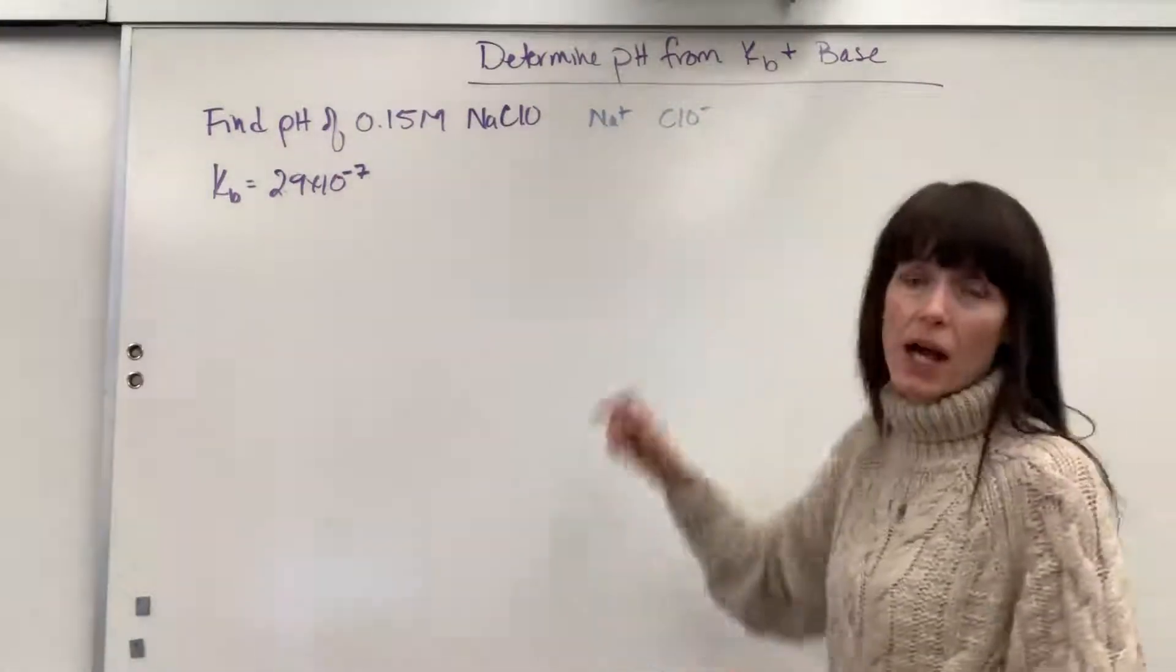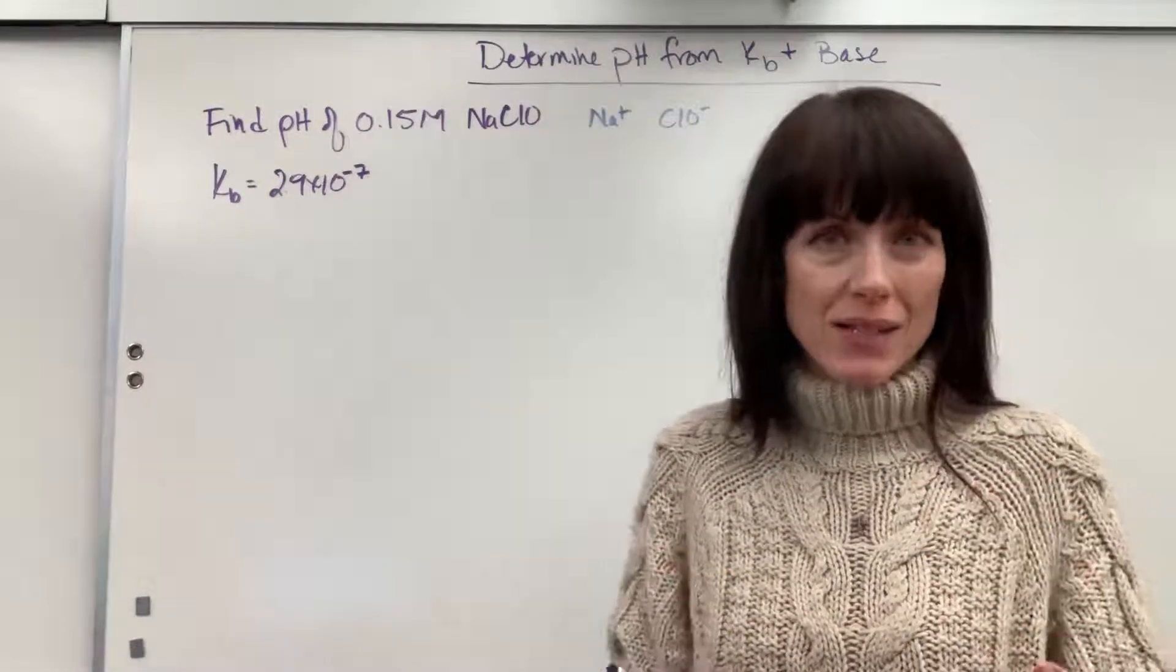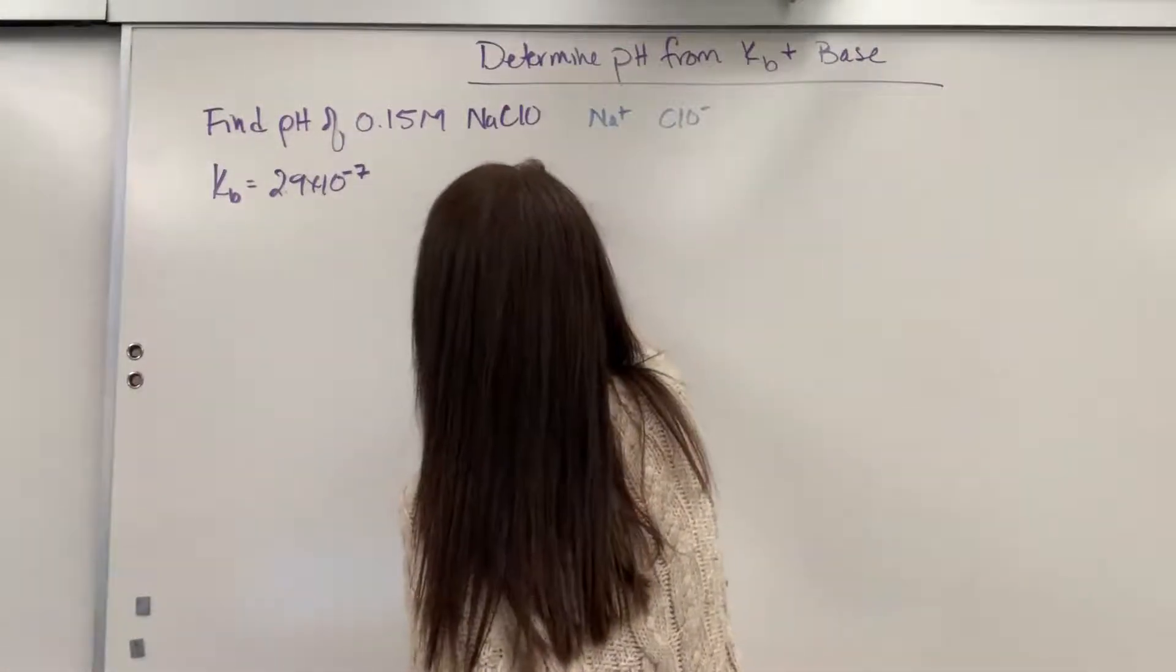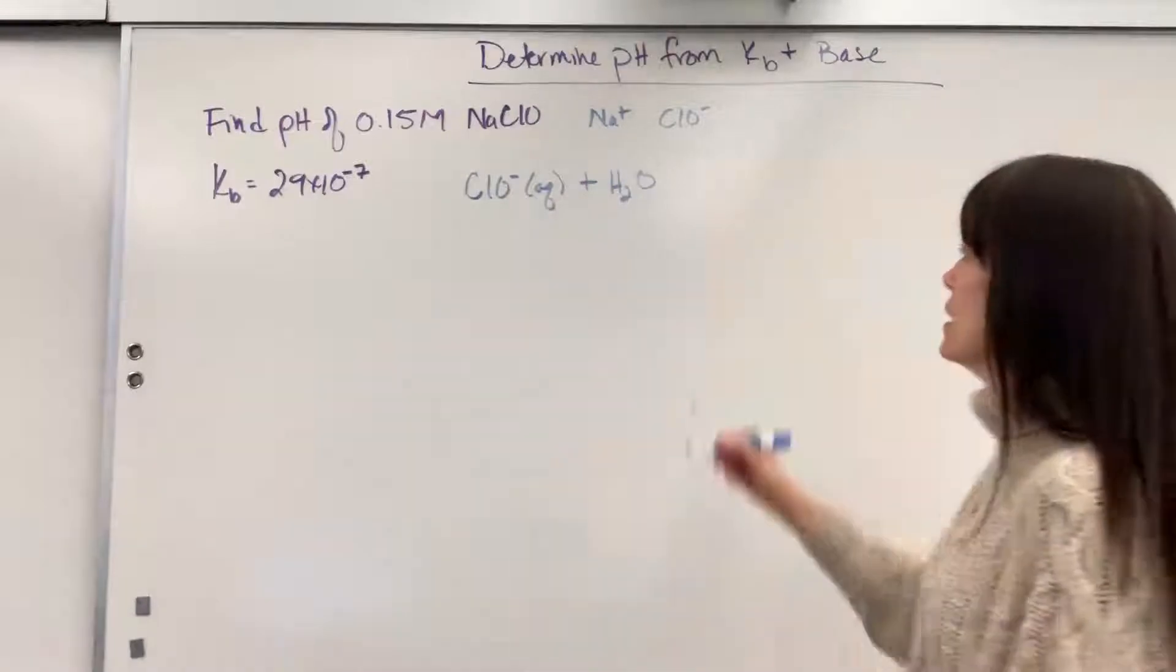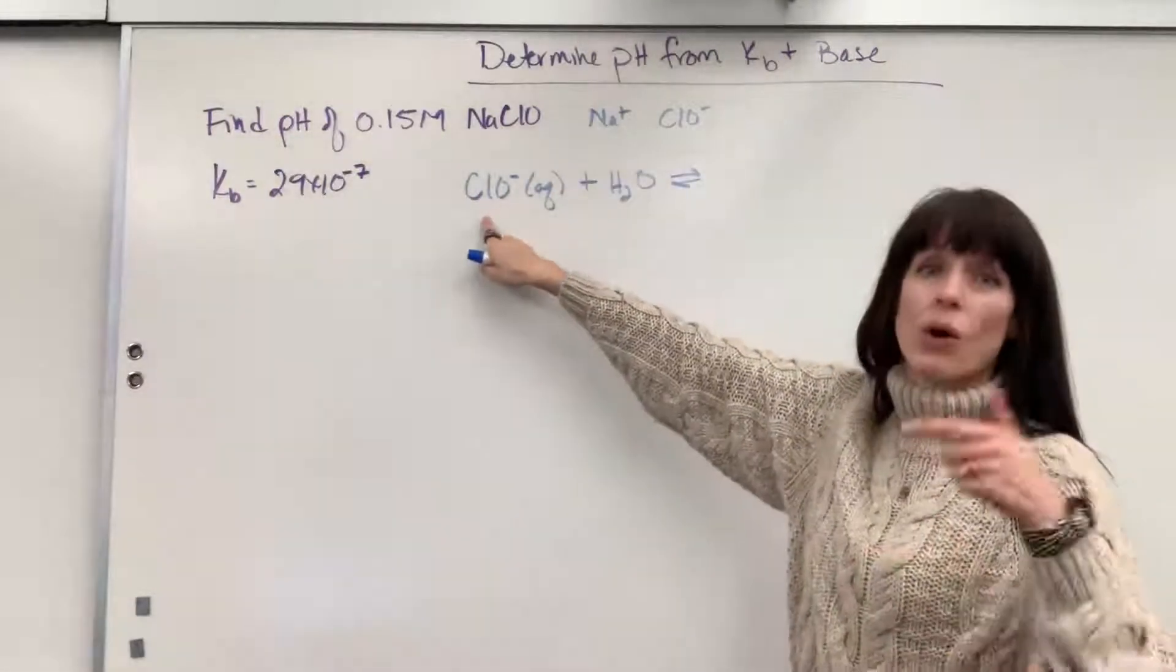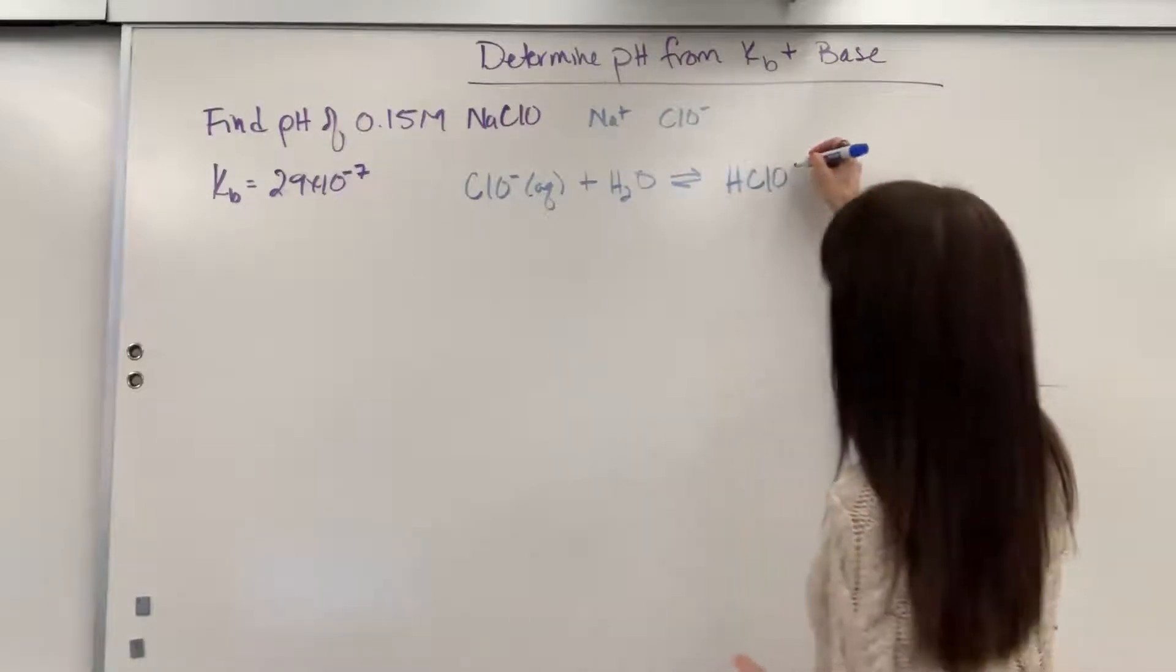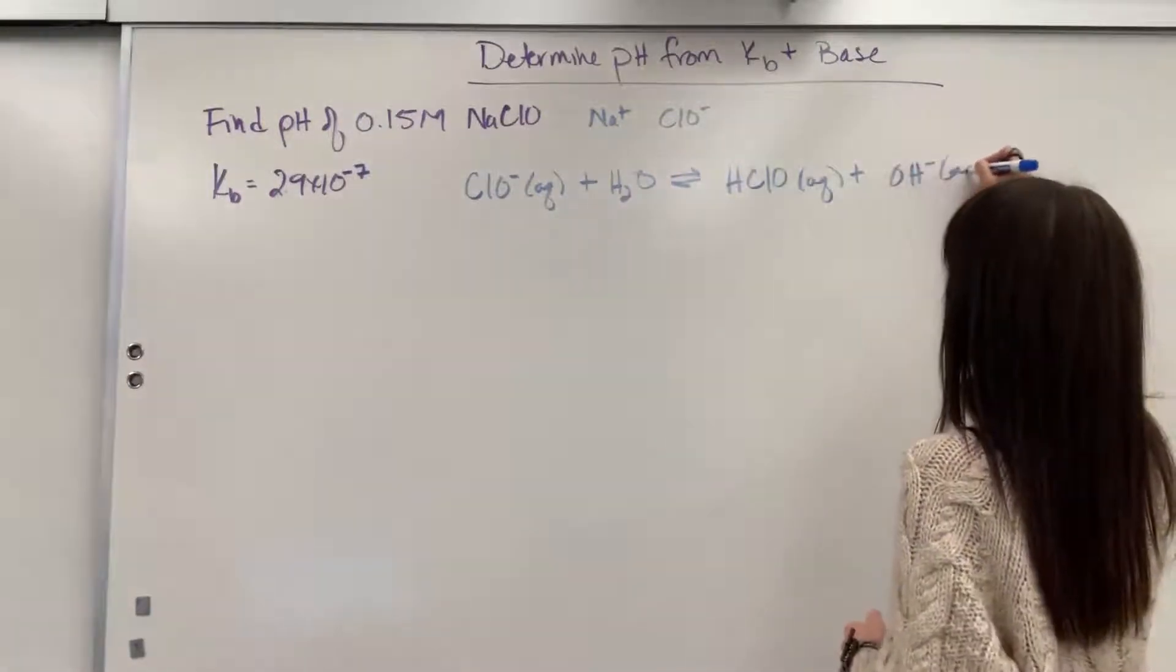You take just this anion, the hypochlorite. That is what is going to partially react with water and impact the pH. So I'm going to take the hypochlorite ion and we're going to add it to water because this is a solution. The solvent's always going to be water unless you're told otherwise. It's going to be an equilibrium with, this is the base, it's going to accept the hydrogen. The water will be the acid.